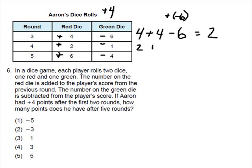In round four, he gains two points, and then loses one. Two plus two is four, minus one is three.